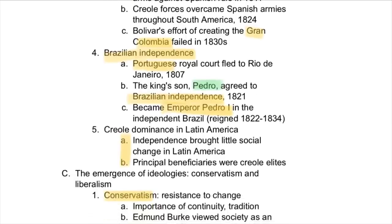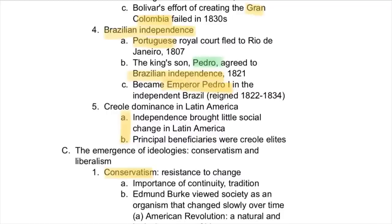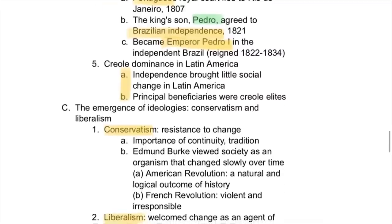In Brazil — which was actually a Portuguese colony — the Portuguese royal court fled to Rio de Janeiro as instability grew. The king's son, Pedro, agreed to Brazilian independence to quell the revolts. Soon after, he became Emperor Pedro I of independent Brazil and reigned for many years.